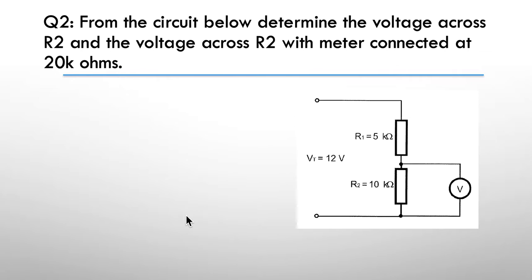We now move on to question 2. From the circuit below determine the voltage across R2, and the voltage across R2 with the meter connected at 20k ohms.